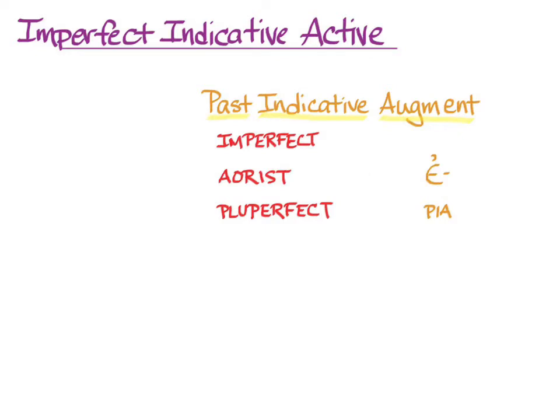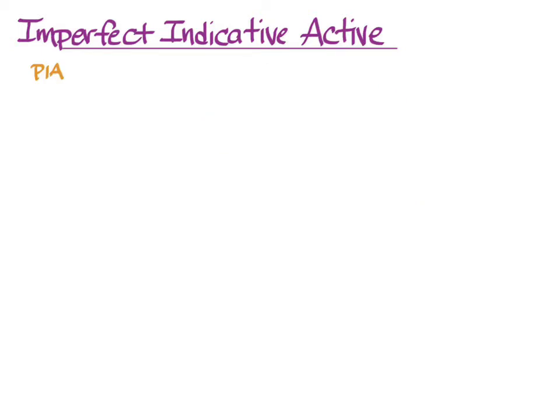So let's get back to the imperfect indicative active. It's past time and indicative, so we need the PIA, the past indicative augment, plus the stem from the first principal part, plus the endings of the imperfect. Let's start with Luo's first principal part and get the stem by taking off the omega. And we add the augment.